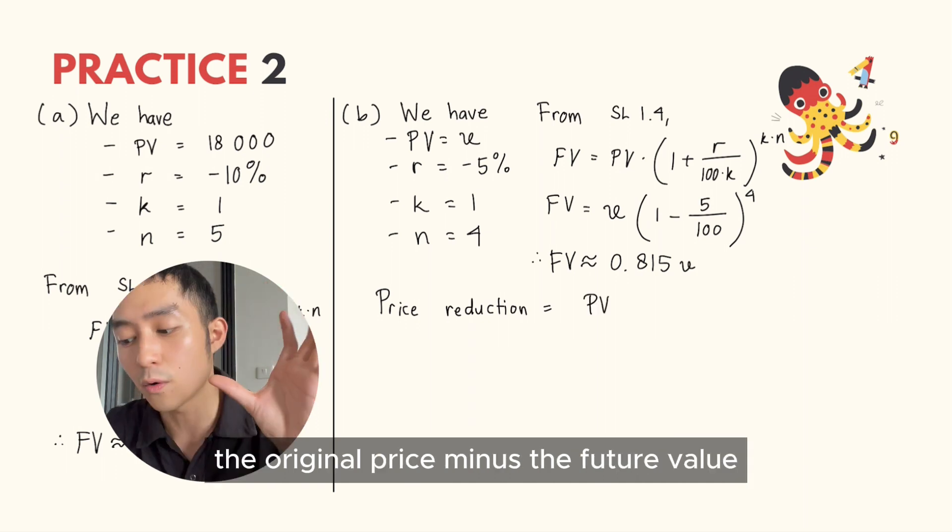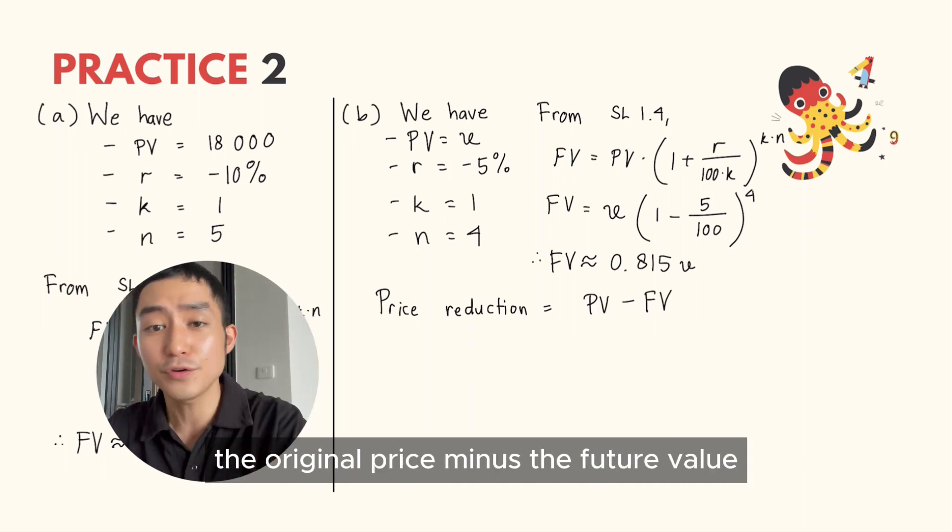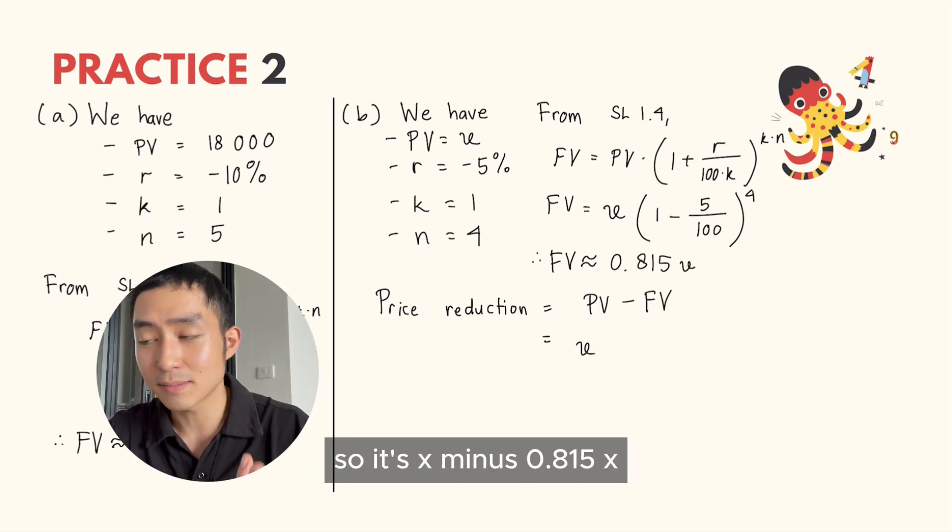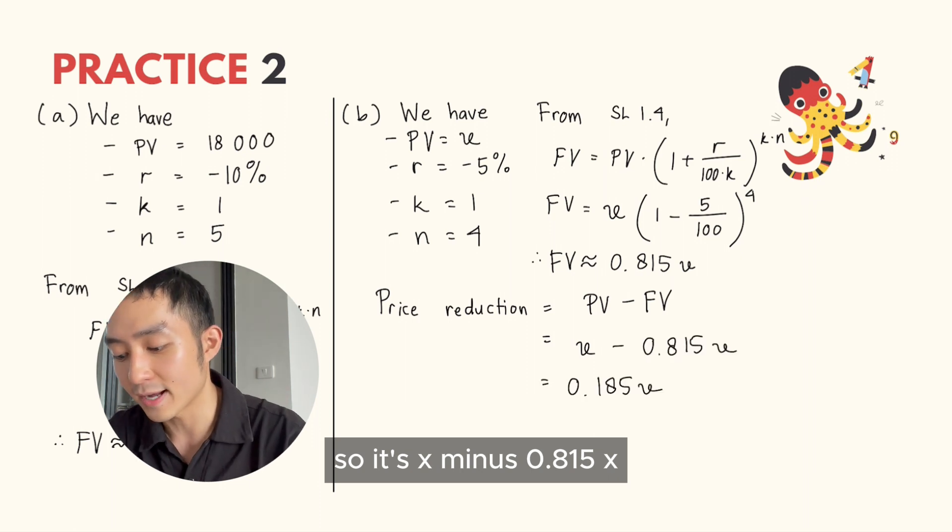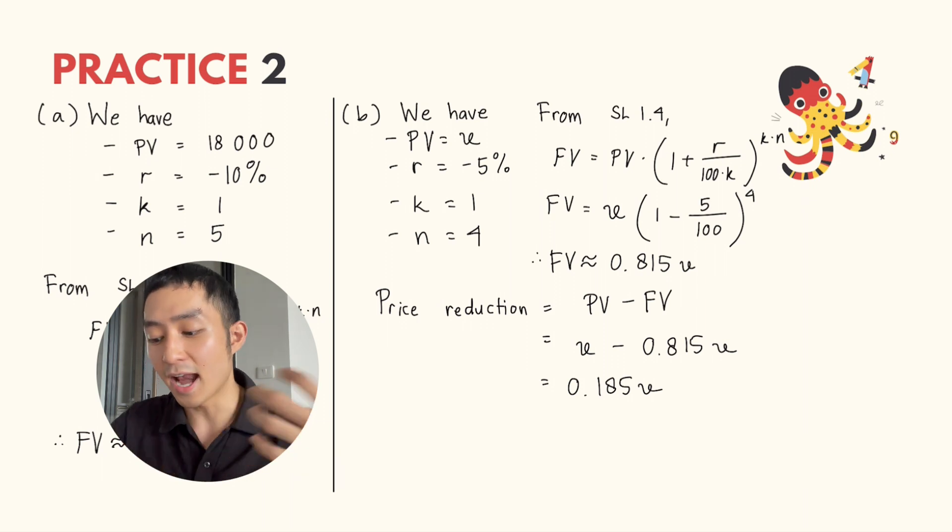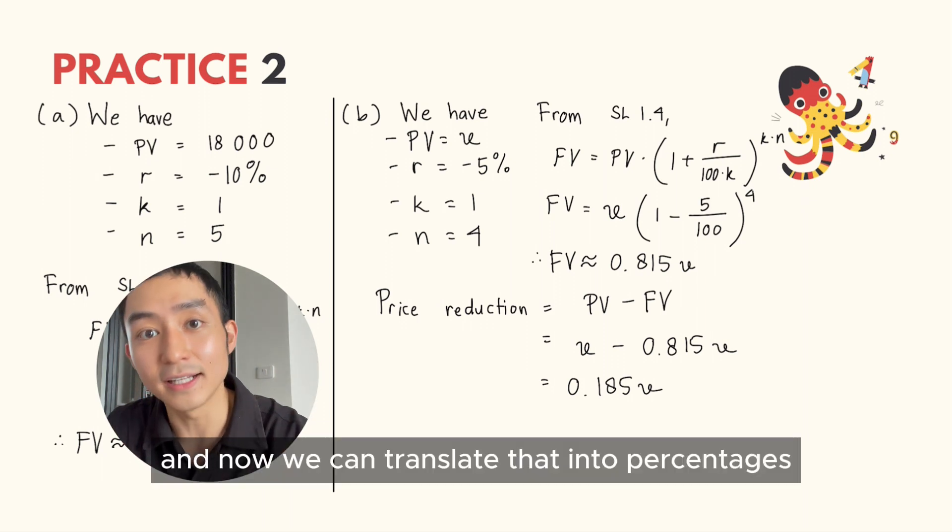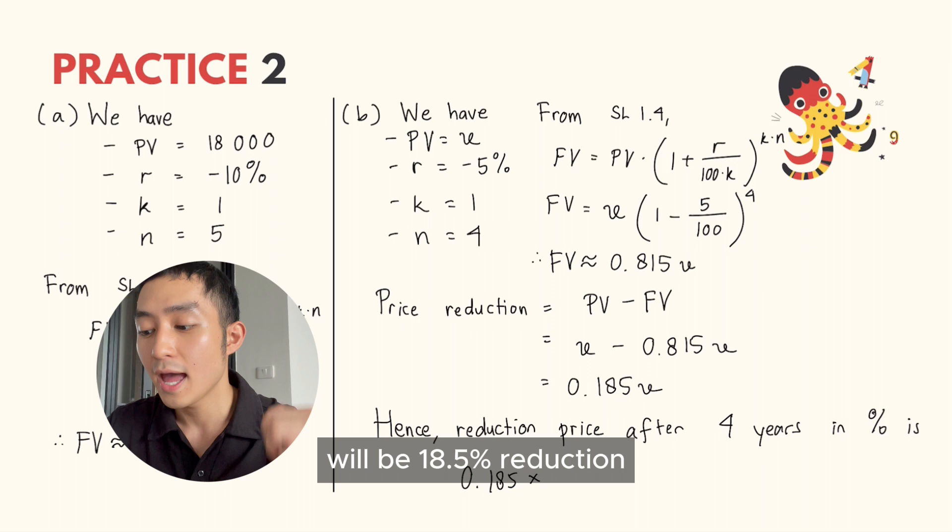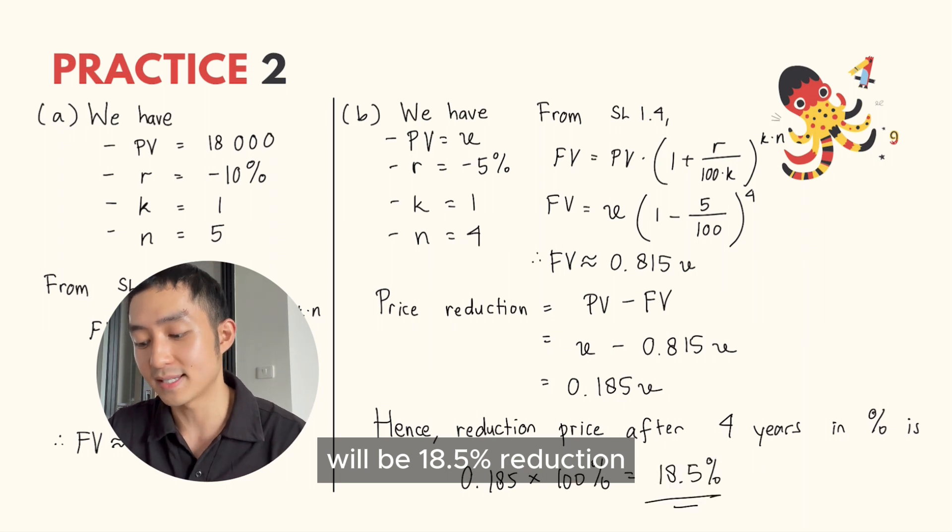Price reduction goes from the original price minus the future value. So it's x minus 0.815x. The reduction is 0.185x, and we can translate that into percentages, which will be 18.5% reduction.